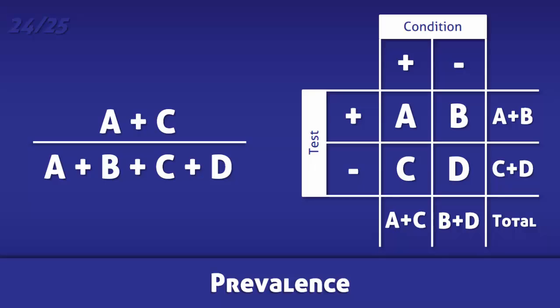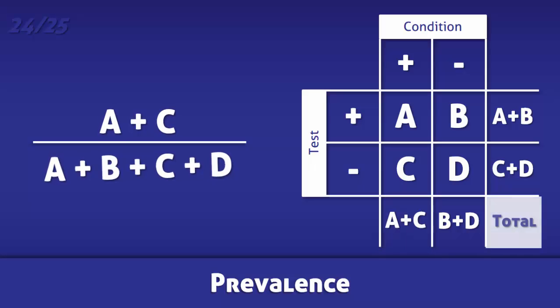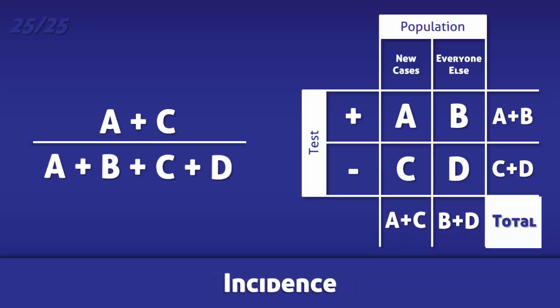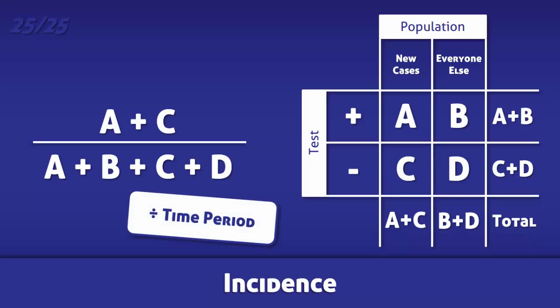For prevalence, divide the number of people with the condition by the total number of people in the population. For incidence, divide the number of new cases by the total number of people in the population, and also remember to divide by the time period.